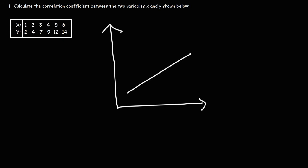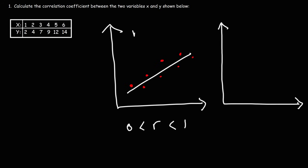Now in this example, the points are not necessarily on the line, but they're close to it. These points have somewhat of a linear relationship, but not exactly one. So in this case, r is going to be somewhere between zero and one. It's positive because the line is increasing — it has a positive slope — but it's not exactly one. If we were to put a number to it, it might be 0.8 or something.